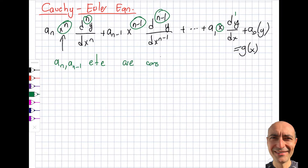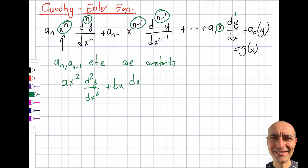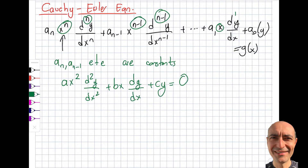For the second-order case, we write it as: a·x²·(d²y/dx²) + b·x·(dy/dx) + c·y = 0. Nice and easy — just the second-order form now.